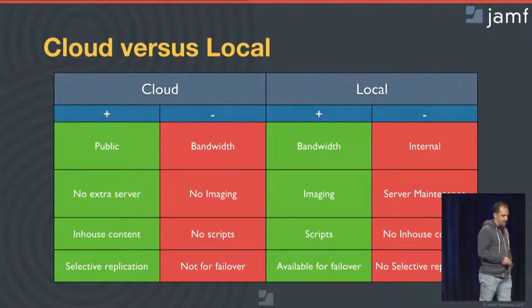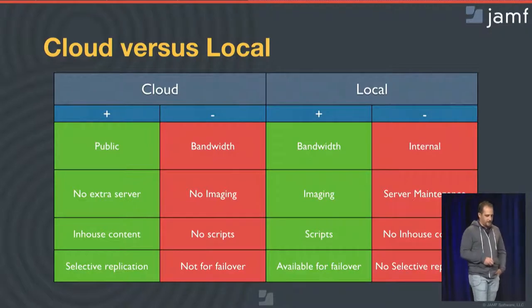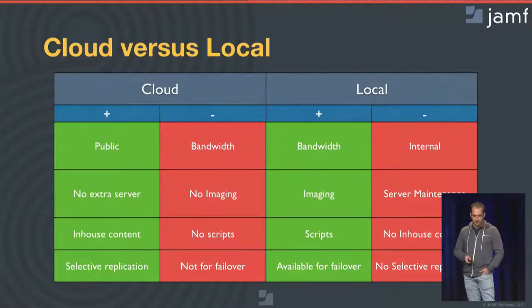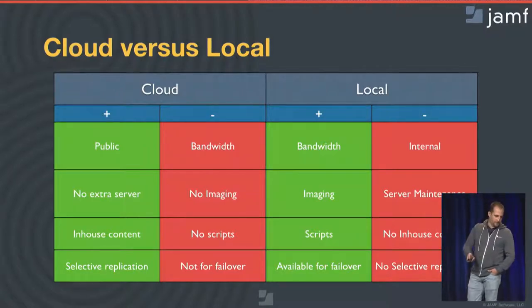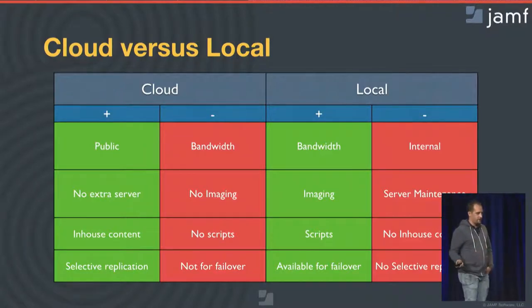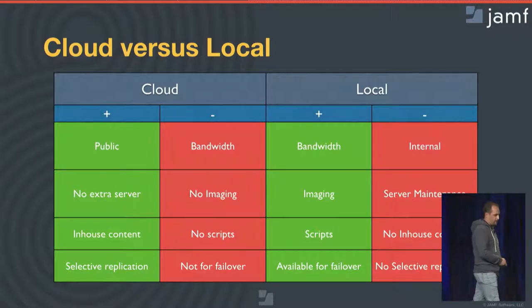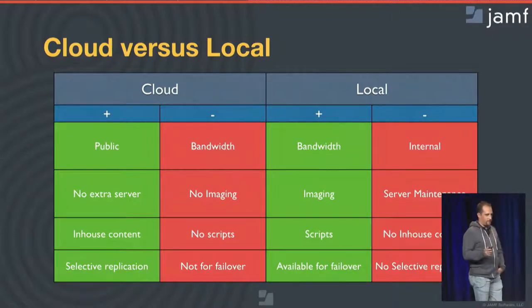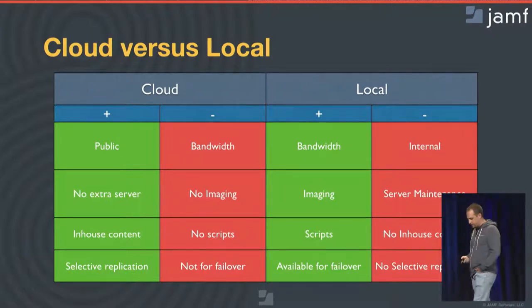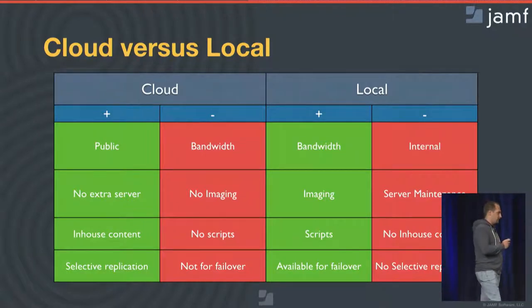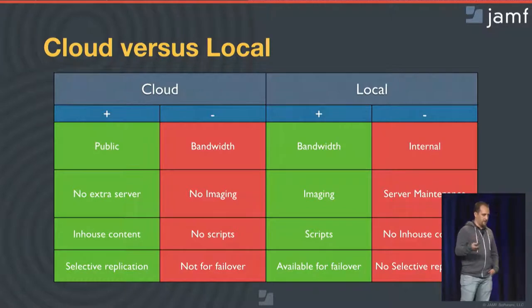Selective replication — once you have multiple distribution points, you will need to copy all the content across all distribution points. One thing we can do is select what type of files will actually be copied to another distribution point. The key thing to remember is that it's only working from a local file share towards the cloud, and not the other way around.